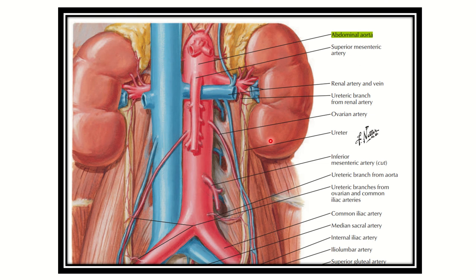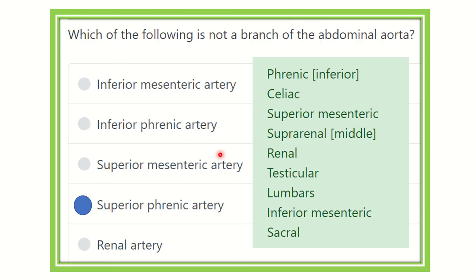Zooming in, we can see the inferior phrenic, middle suprarenal, renal, and gonadal arteries. The anterior branches are the celiac trunk, superior mesenteric artery, and inferior mesenteric artery, along with the posterior and terminal branches.